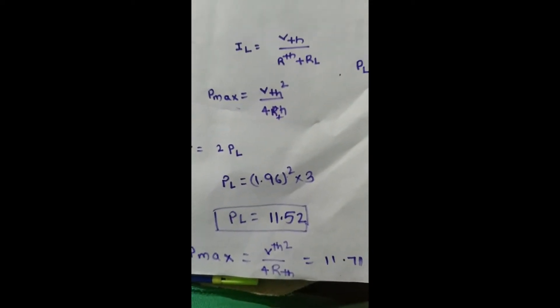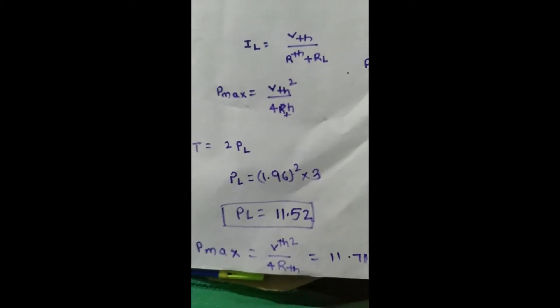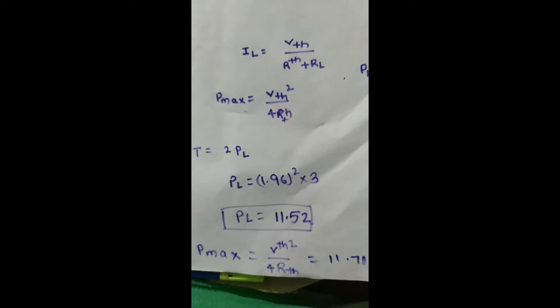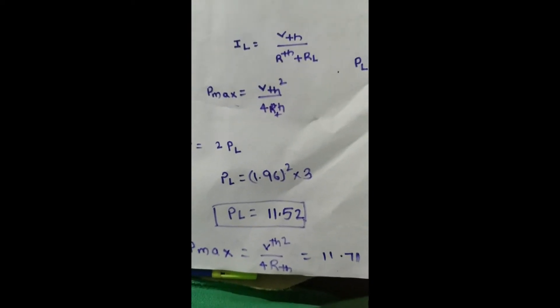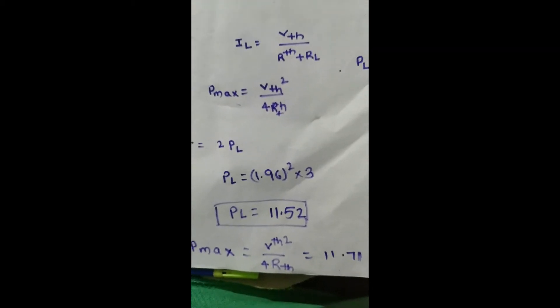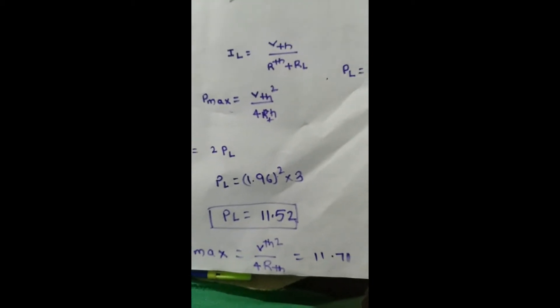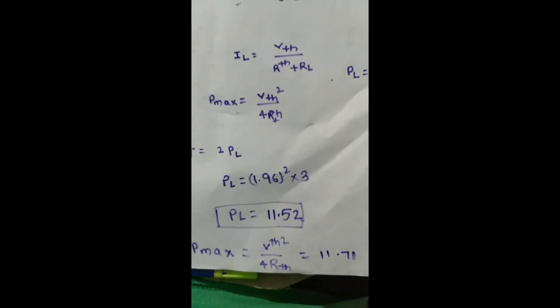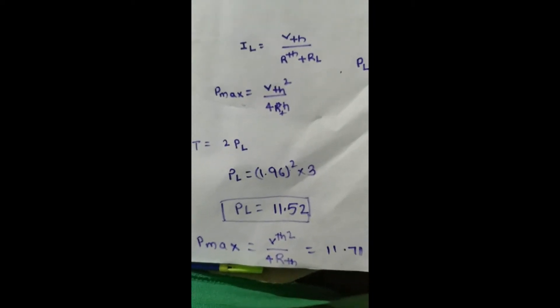So PL value is IL squared into RL, which gives PL equals 11.52 watts. Then to find P maximum, the formula is Vth squared divided by 4 times Rth. Substituting: Vth squared is 9.36 into 9.36, divided by 4 into 1.87. By substituting these Vth and Rth values, we get P maximum equals 11.71 watts.